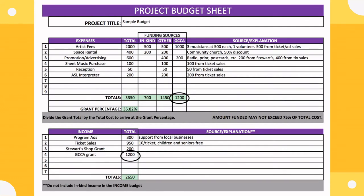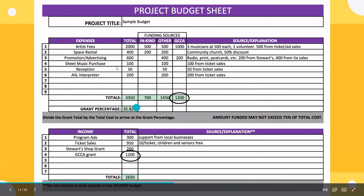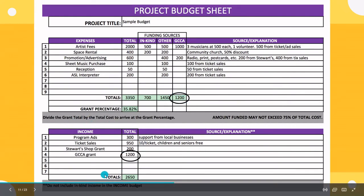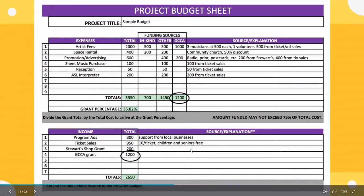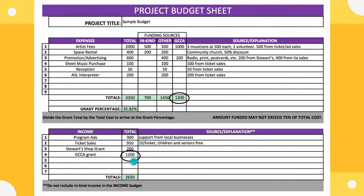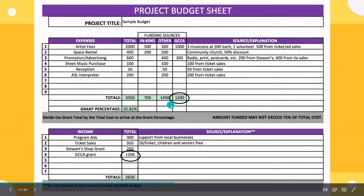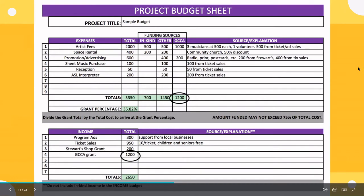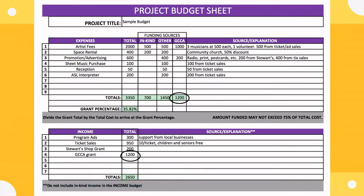Also include your income section at the bottom of the budget. Everything above is your expenses; the income section includes projected ticket sales, any external grants you expect to receive, and the amount you're requesting from CREATE — which should match both the expense total and the number in your application. Also, applying for other grants like the Stewart's Shop grant shows panelists you're really committed to supporting your project, though external funding is not required.